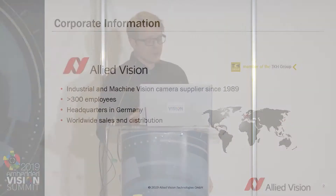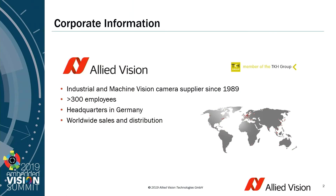First off, some corporate information about Allied Vision. We are an industrial and machine vision camera manufacturer. We have 30 years of experience, over 300 employees, and our headquarters are in Germany. We have worldwide sales and distribution and of course the corresponding support.